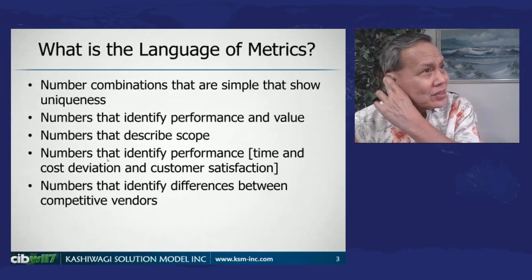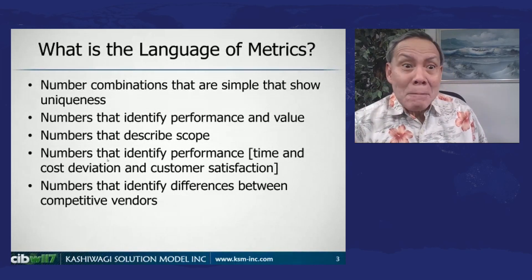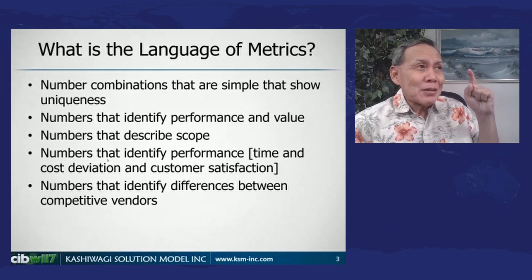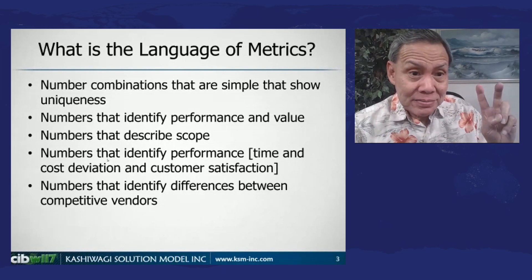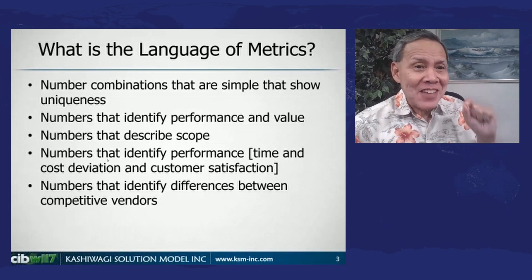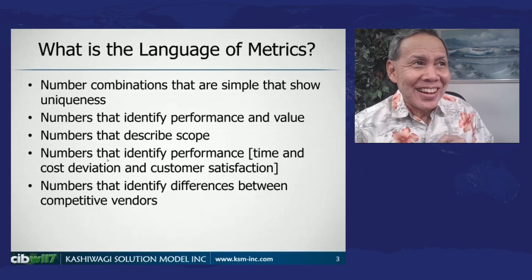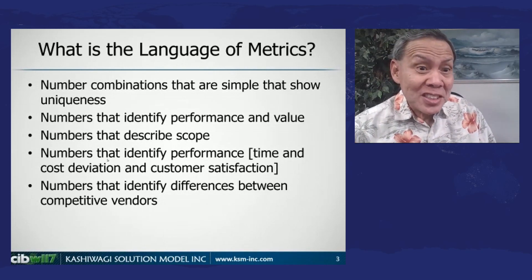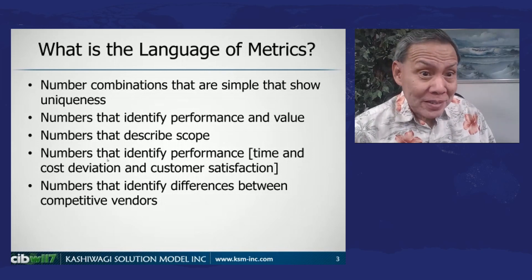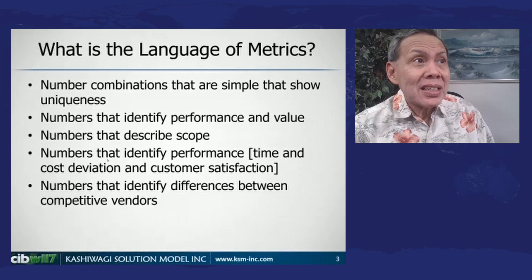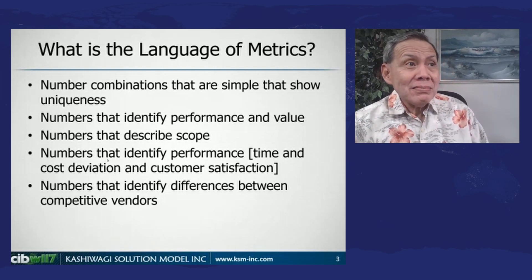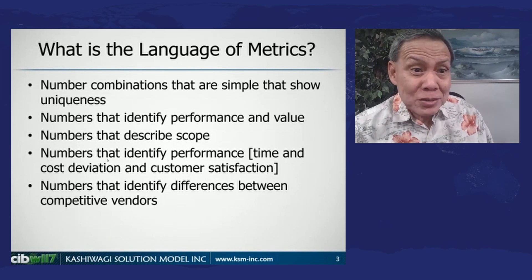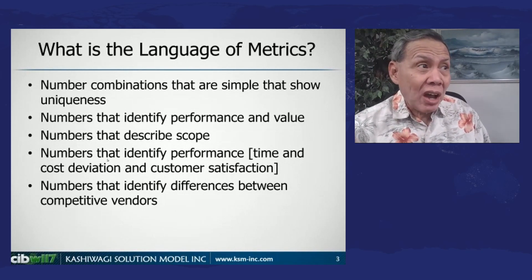What is the language of metrics? Metrics are things that make you see that items are unique. They identify two major things: performance and value. And the numbers that describe the scope of what's going to happen in a unique project are metrics. These are numbers that identify performance, which means they have something to do with time and cost deviation and customer satisfaction.